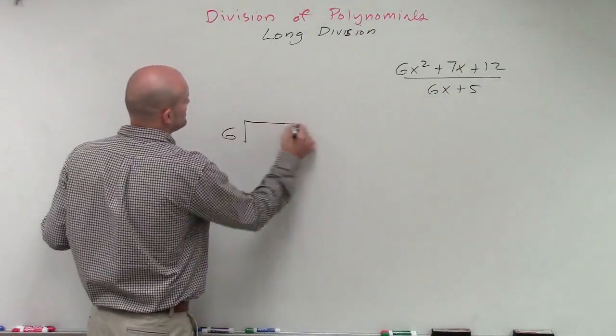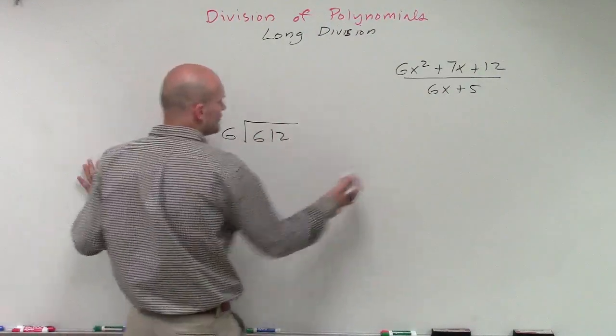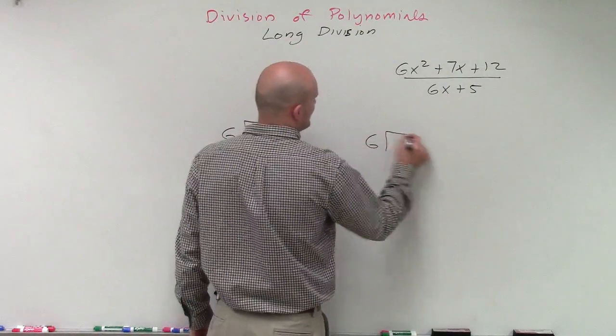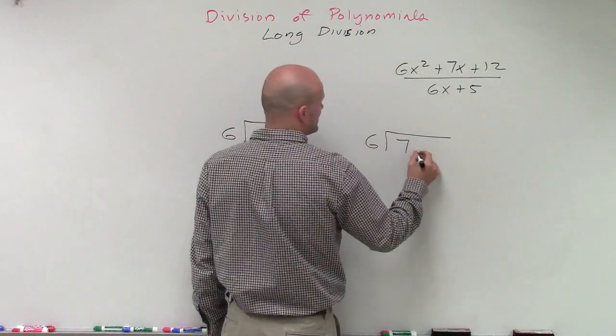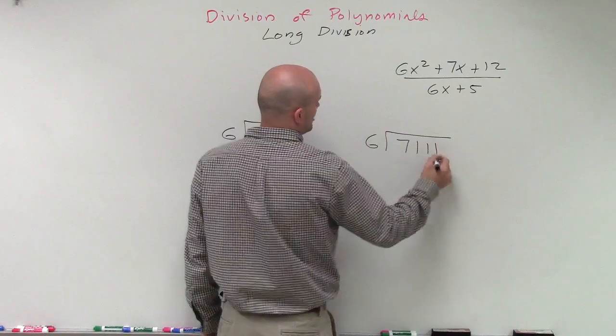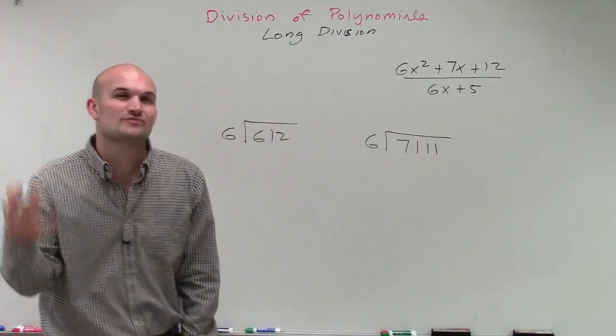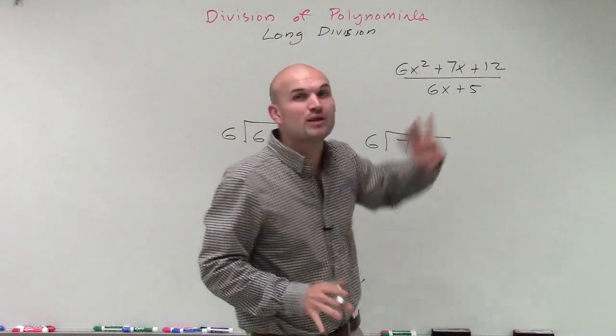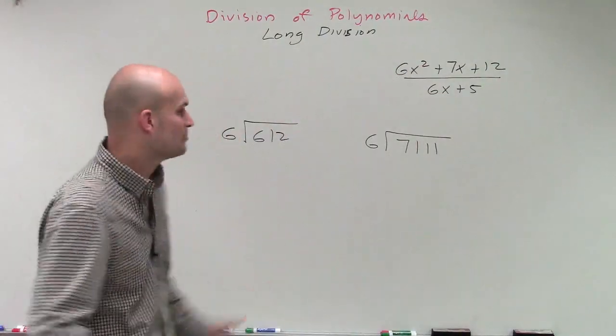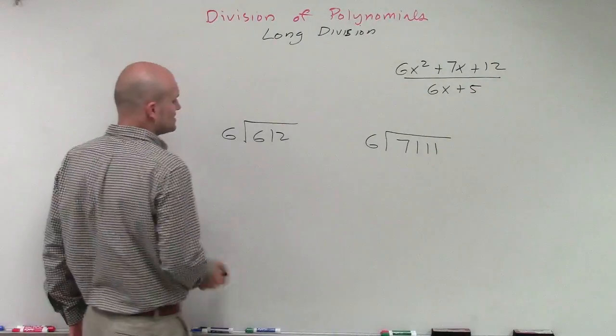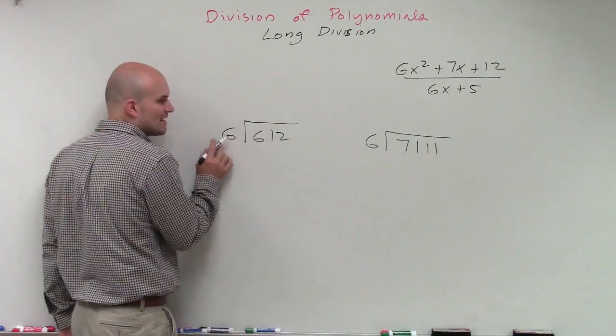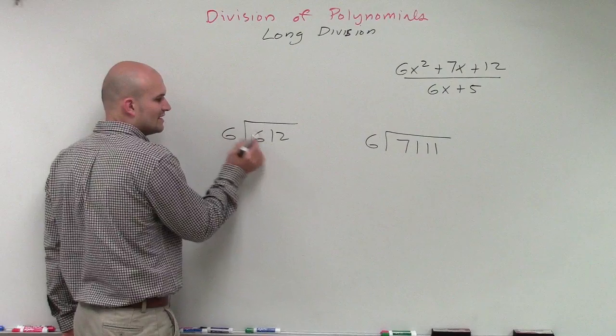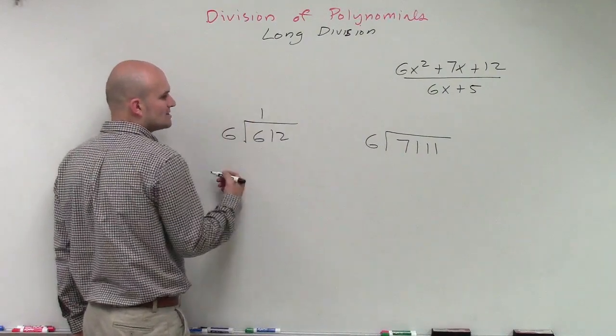So I'm going to do two problems. I'll do 6 divided into 612, and let's do 6 divided into 7,111. So what is the process of using long division with numbers that we can use now to apply to polynomials? So remember, the first thing we do is we take our term and our divisor and we divide it into the first term of the dividend. 6 divides into 6 one time.